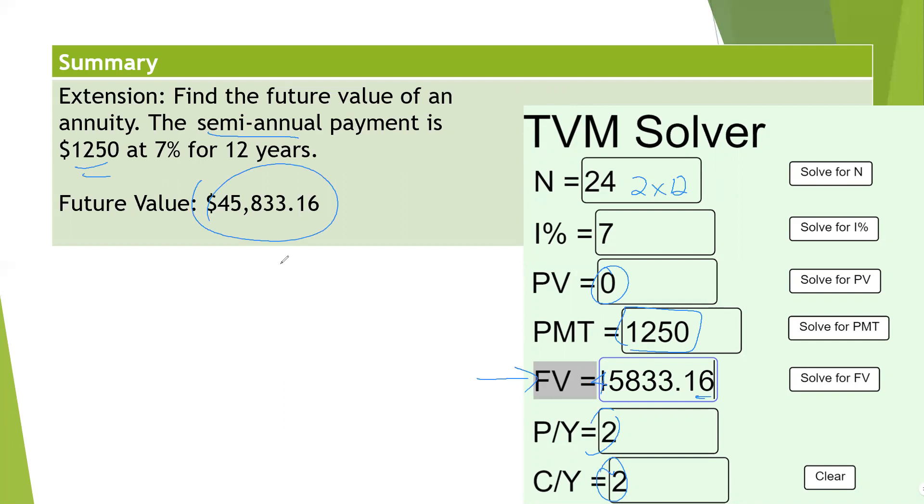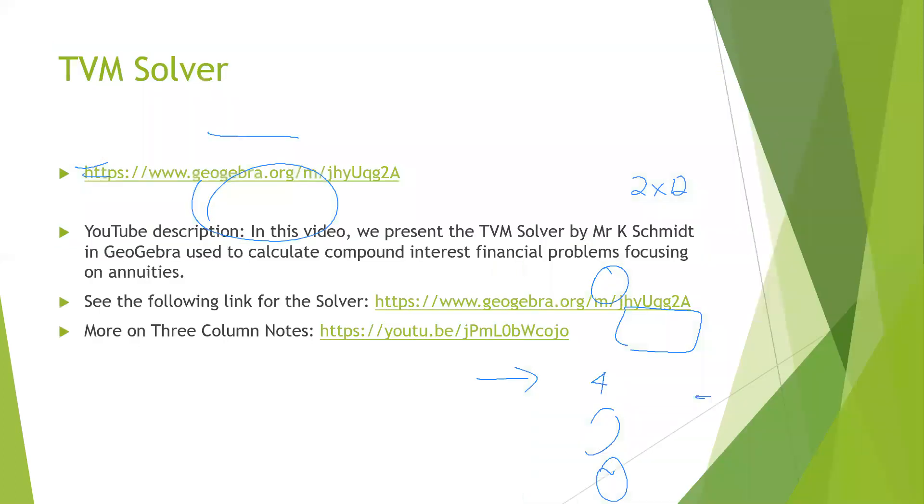So if you were to put away $1,250 every six months for 12 years and you were able to get 7% return, that is how much you would get. Here are the links again. Let me know if you have any questions and keep up the great work. Thanks for being here.